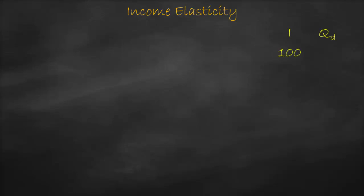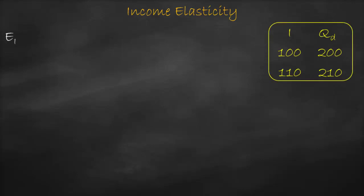Let's get a numerical example about a normal necessity good. If income is 100 and quantity demanded is 200, and income increases to 110, quantity demanded will increase as well to 210. Higher income means higher quantity demanded — we have a positive relationship, so we can tell it's a normal good. Let's prove it with income elasticity.